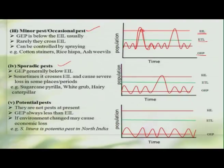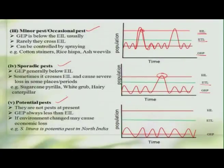We also have the sporadic pest, where the GEP will be much lower than the economic threshold level, but occasionally and unexpectedly the population will increase and go beyond the economic injury level, causing economic damage. Then we have the potential pest, where the pest population is much lower than the economic threshold level, but we do not know when they may become a major one — they are quite potential to become major, so we should maintain a constant watch over these pests. In this class, we learned about the different categories of pests based on different factors and understood their level of incidence and nature of damage. Thank you.